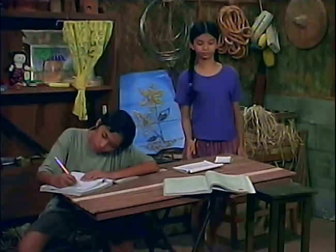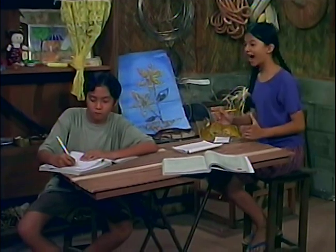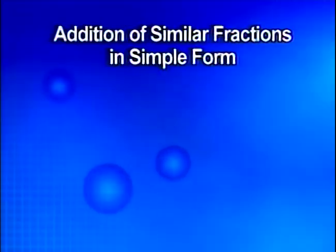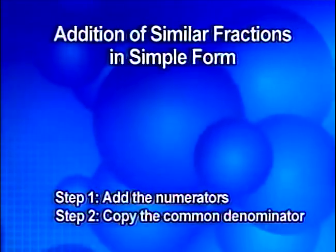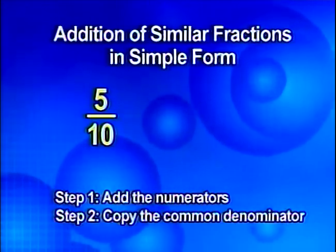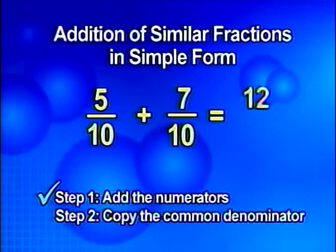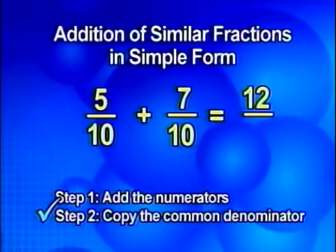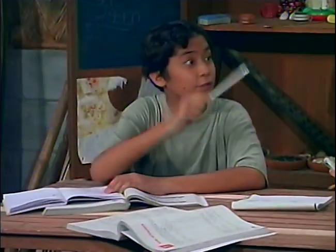I'll simply add their measurements. That's easy. First, we add the numerators and copy the denominator. So for the length, five tenths plus seven tenths — five plus seven equals twelve — over the common denominator ten. So I need a cardboard that is twelve tenths meters long.